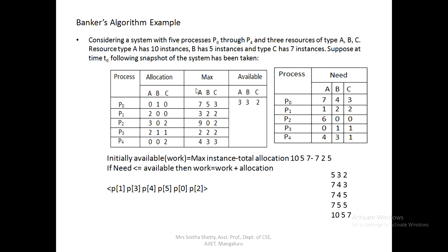Similarly, we read the maximum matrix: P0 = 7,5,3; P1 = 3,2,2; P2 = 9,0,2; P3 = 2,2,2; P4 = 4,3,3. So the total input required is: number of processes, number of resources, maximum instance of each resource, and two matrices — the allocation matrix and the maximum matrix.